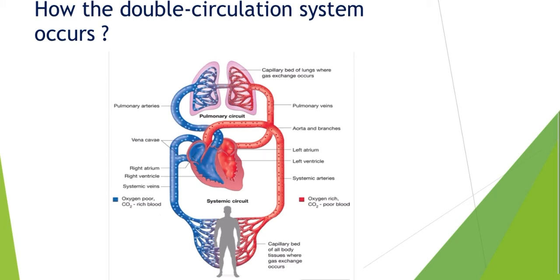First, as a reminder: the right hand side of the heart is composed of deoxygenated blood, and the left hand side of the heart is composed of oxygenated blood.